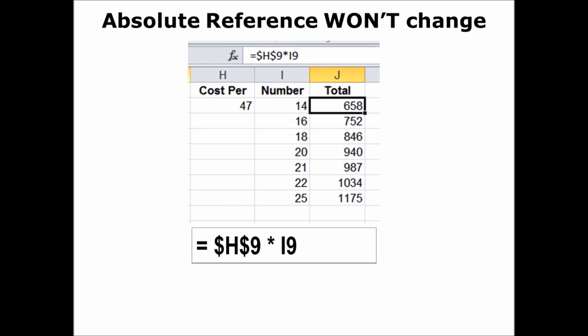Here's a tip: in the formula, highlight H9 and hit F4 — it will automatically put those dollar signs in for you. That means it is absolutely H9 and will not change as a relative reference when used in any formula. The I column will still change relatively — I10, I11 — because that is relative. A way to remember it: dollar signs are not relative, because your relatives have no money — no dollar signs — whereas the absolute reference does.